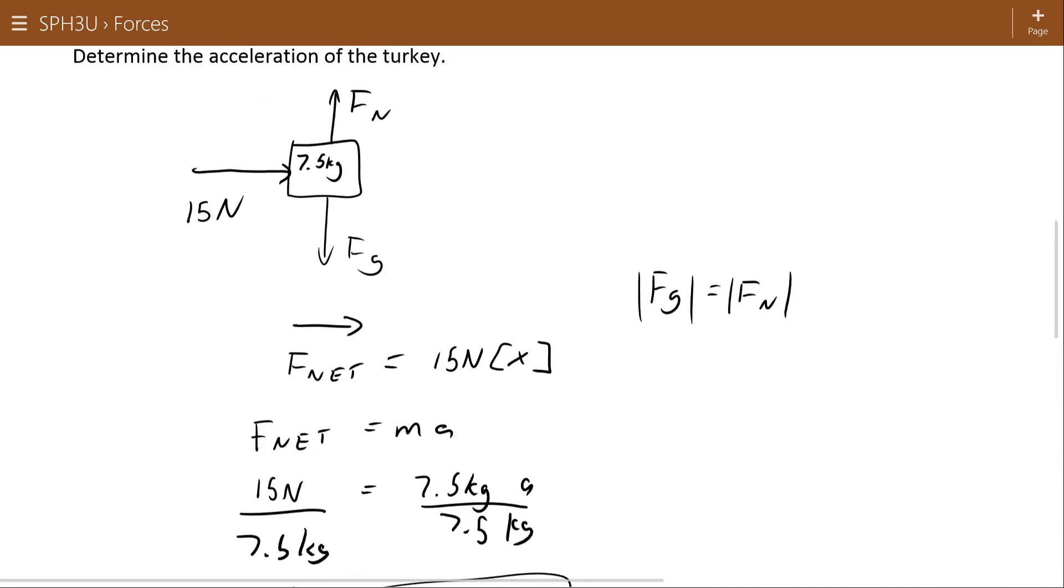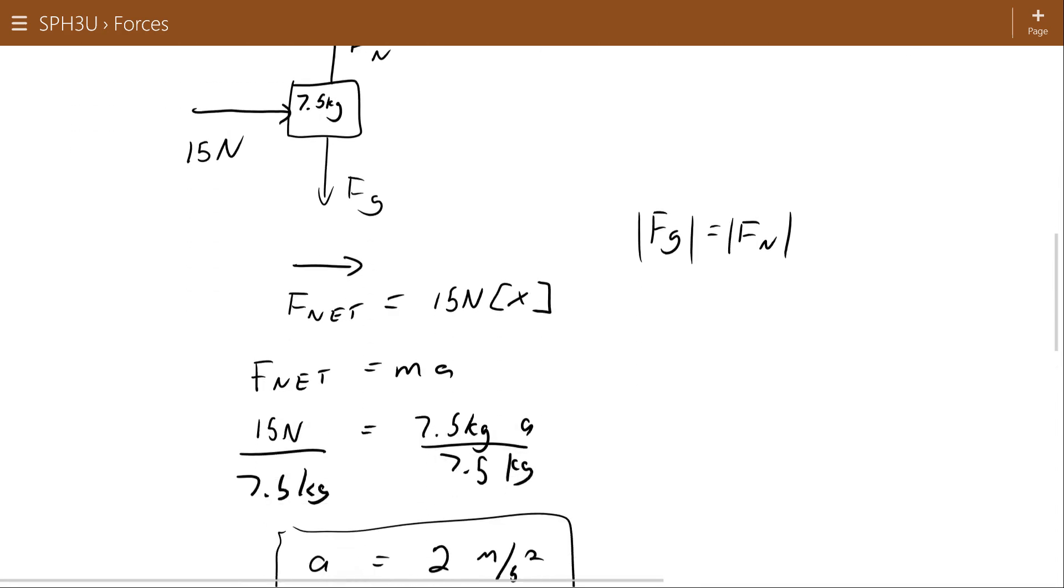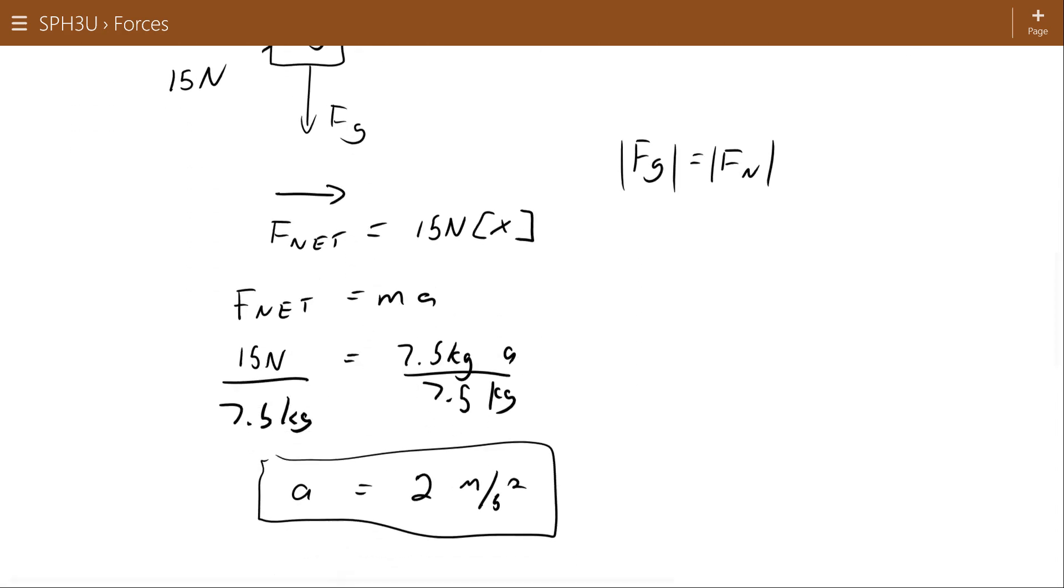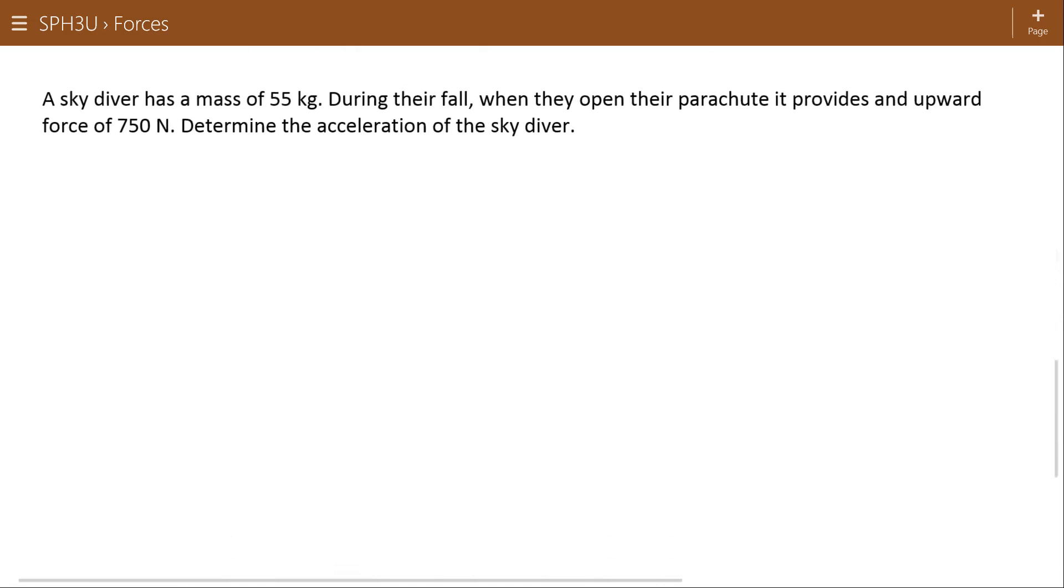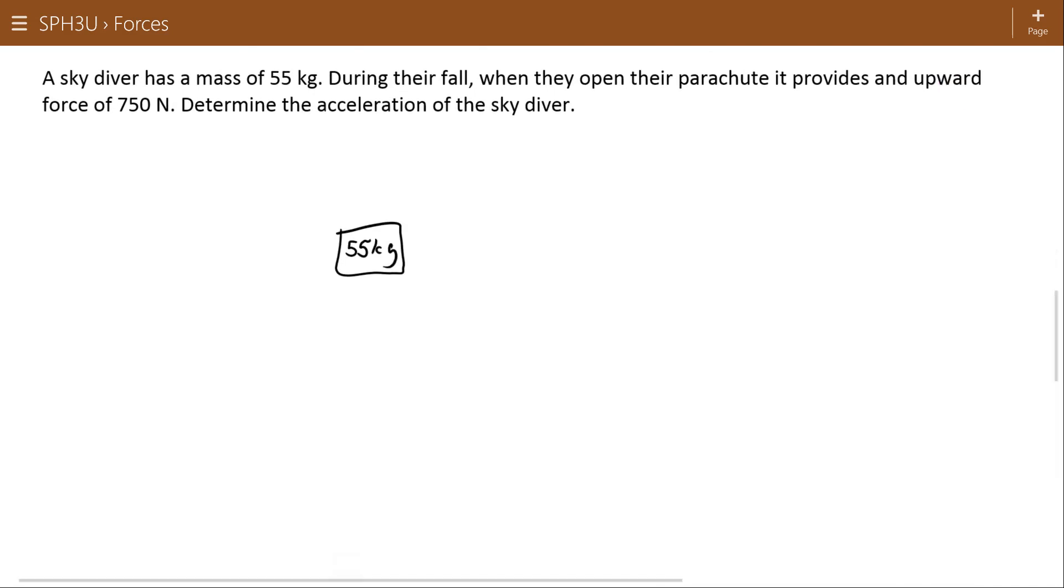So that's a really simple one force problem where we can see how to use this. Let's look at something with at least a couple forces here. A skydiver has a mass of 55 kilograms. During their fall, they open their parachute and it provides an upward force of 750 Newtons. Determine the acceleration of the skydiver.